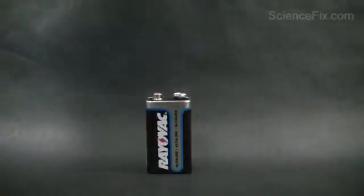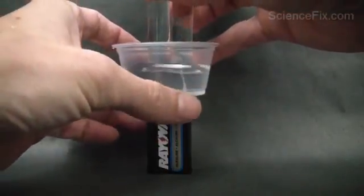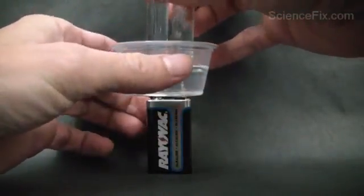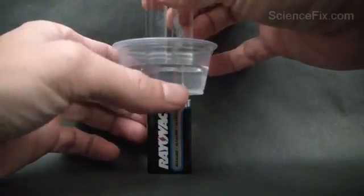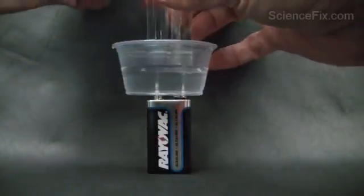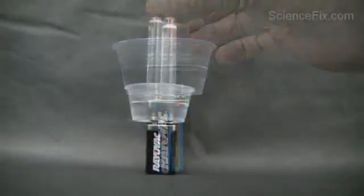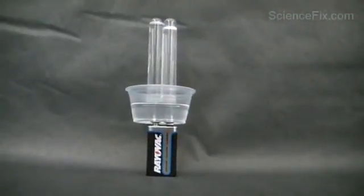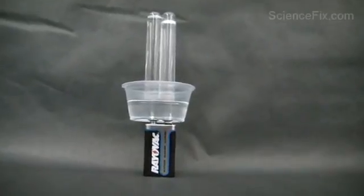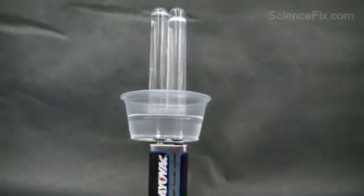In the container is going to be some water that has baking soda mixed into it. The baking soda in the water allows electricity to flow between the two metal tips of the push pins, so now you set them on the leads and the electricity can flow between the two push pins.